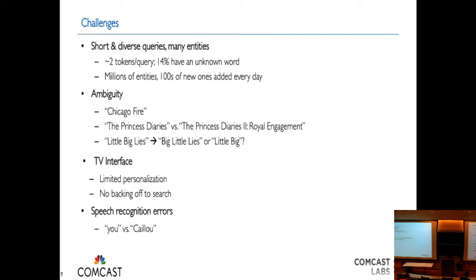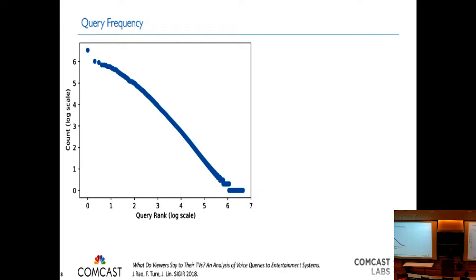As part of our data analysis, we looked at frequency metrics. As expected, you see a Zipfian distribution — a lot of very frequent queries and then a long tail of rare queries. The most frequent query we get is actually "Netflix." Comcast and Netflix made a deal where all Netflix content, and since then Amazon Prime and others, are indexed in our system, so with the same voice remote you can access all of that. Netflix and YouTube are actually the top two, and then people look for recordings — DVR — CNN, and of course free movies.